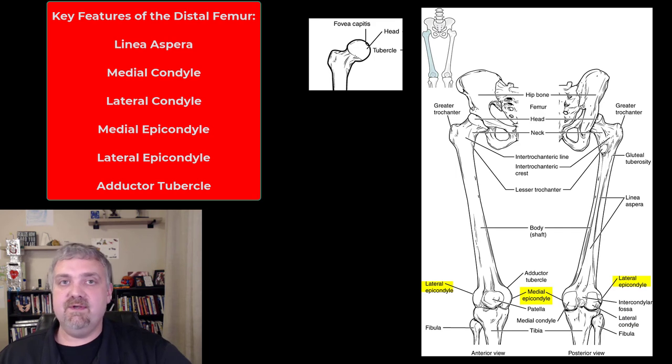Right above those, or kind of to the sides and above, you see the medial and lateral epicondyle. So epi means above or around. So you have the medial and lateral condyle, and then right above that, you have the medial and lateral epicondyle. And then on top of the medial epicondyle, you have another little bump there called the adductor tubercle, which is where part of the adductor magnus muscle is going to insert.